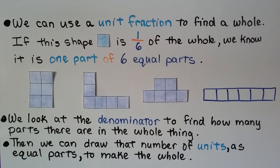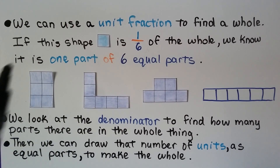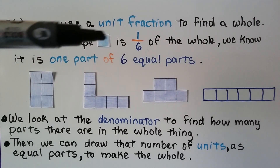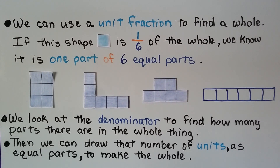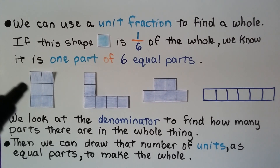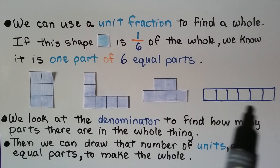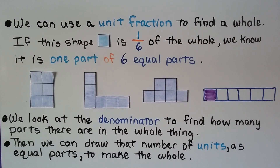We can use a unit fraction to find a whole. If this shape is one-sixth of the whole, we know it is one part of six equal parts. We look at the denominator — this little six — and it helps us find how many parts there are in the whole thing. So we know there are six equal parts, and that's just one of them. We can draw six squares to show sixths. Here we have six squares, or we can make it in a straight line, and one-sixth of them would be one of the six squares. We can draw that number of units as equal parts to make the whole, and we can show one-sixth by shading in one of the parts.